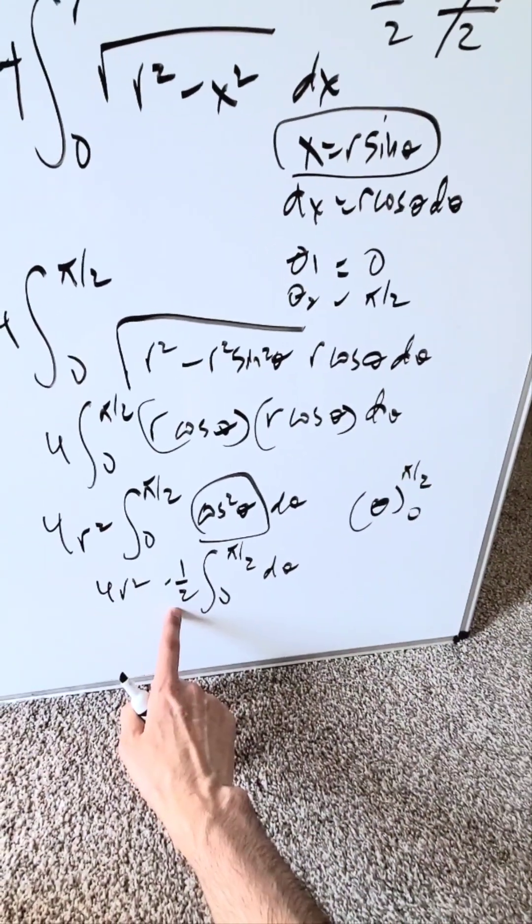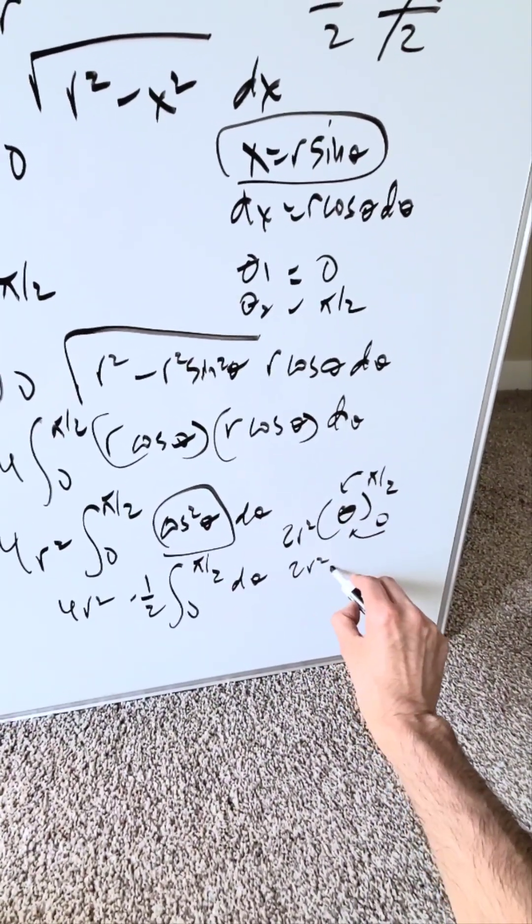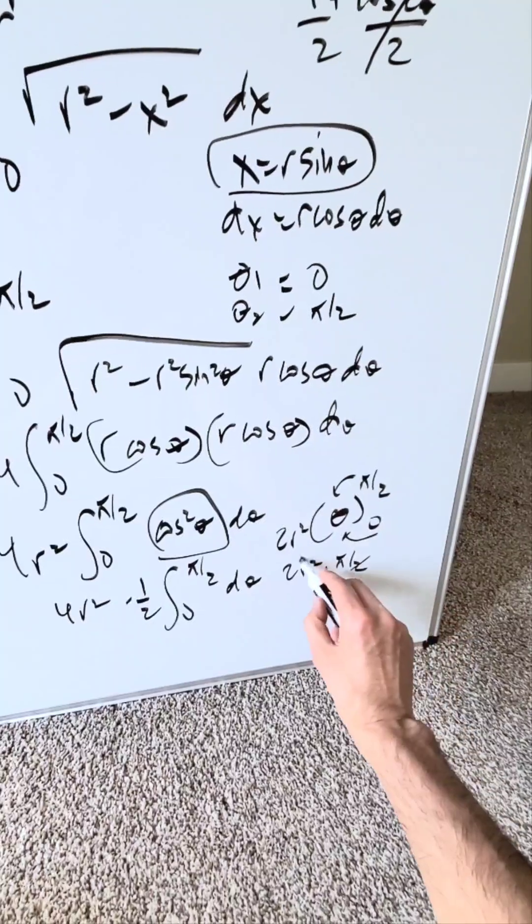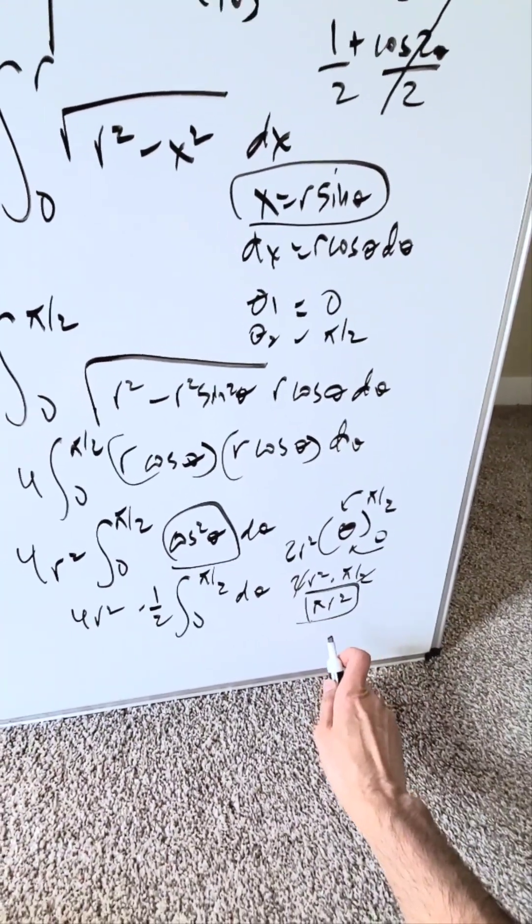4 r squared times 1 over 2 is a 2 r squared. Upper limit, lower limit, the difference of the two, you'll have 2 r squared times pi over 2. Simplify this. What do you have? Pi r squared. And here's your area formula for a circle.